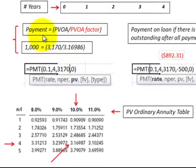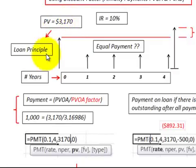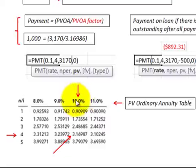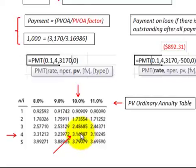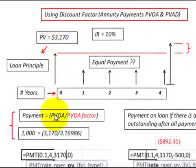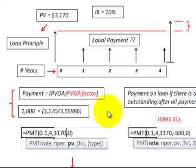Using the payment formula for the present value of an ordinary annuity, we take the loan principal at the beginning of year one and divide it by the discount factor. We go to the present value ordinary annuity table, find the 10% interest rate column and the four-period row, and use the value where they intersect as our discount factor. Dividing the loan principal by this discount factor gives us the payment amount — in this case, equal payments of $1,000 each, which pays off the loan.